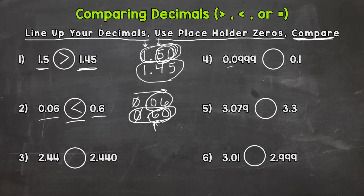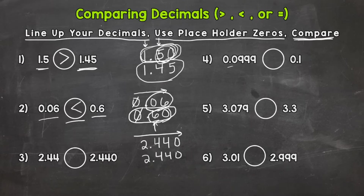Let's go to number three. Line up your decimals: two and forty-four hundredths, and then we line it up with two and four hundred forty thousandths. Put our placeholder zero in and compare from left to right — always check the whole numbers first. We have two twos, can't compare. Tenths place: both fours, can't compare. Hundredths: both fours, can't compare. Thousandths: both zeros. So both of these numbers are actually equal in value. The zero that makes two and four hundred forty thousandths a little longer doesn't matter — it's just a placeholder zero that doesn't add value. These are equal.